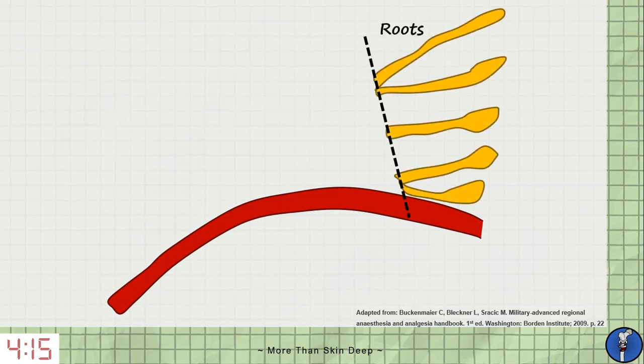The roots arise from the anterior rami of C5, C6, C7, C8 and most of T1. They pass between the middle and anterior scalenes to enter the posterior triangle of the neck.